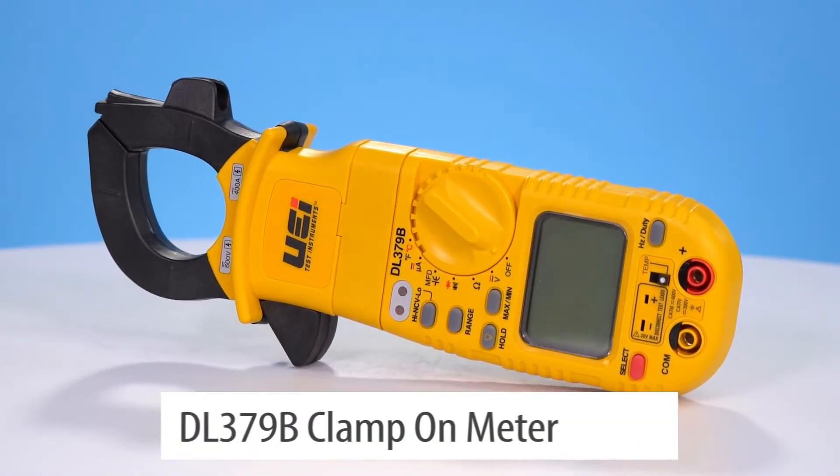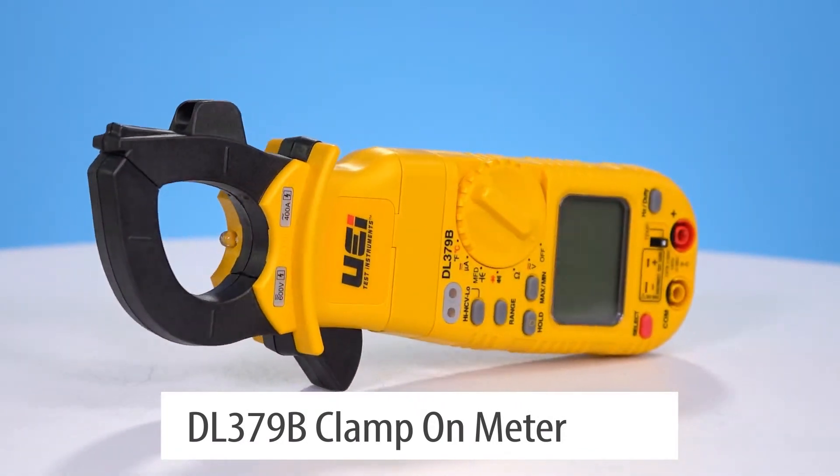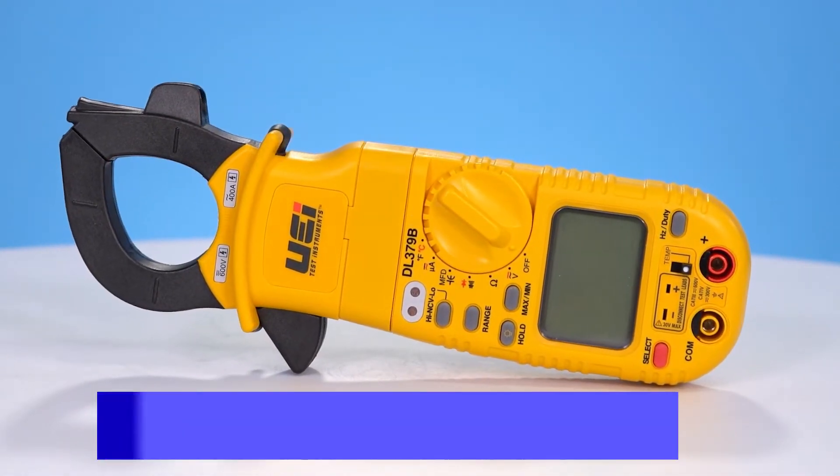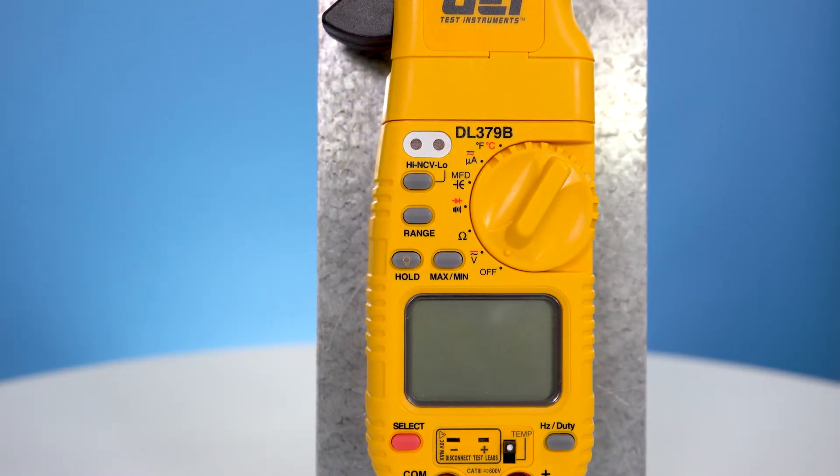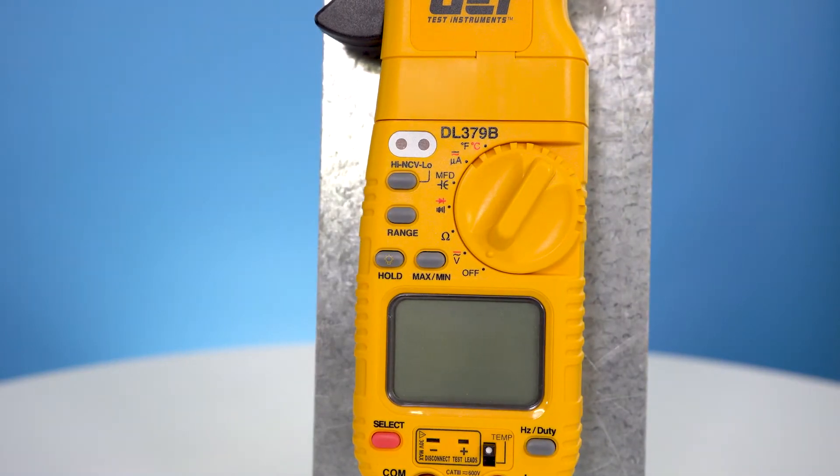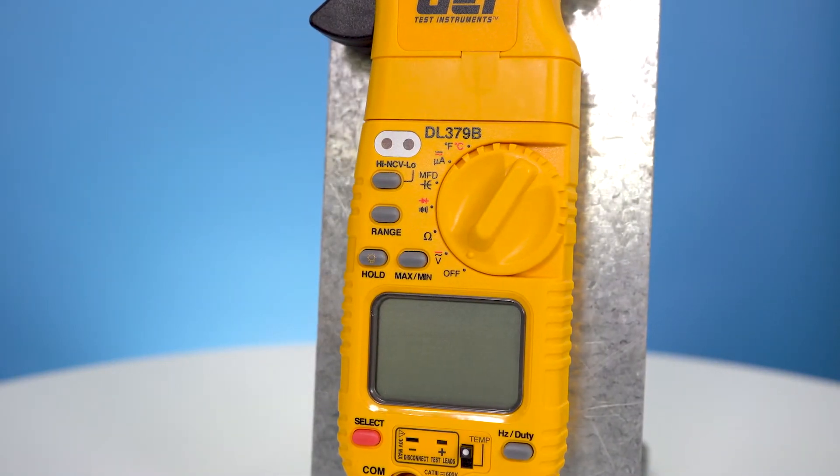I see the DL379B. Yeah, DL379B. So this is one of our more popular clamp-on meters. For your HVAC tech, this is going to do a lot of what they need to do. You've got volts, both AC and DC, ohms, capacitance, DC microamps, and AC amps through the clamp pad. This also does frequency and it does temperature as well.